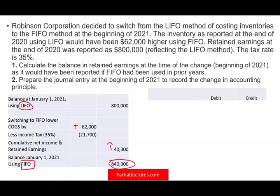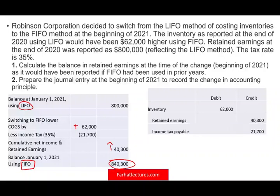We also have to prepare a journal entry. We have to increase inventory by $62,000 — that's obvious. We have to increase retained earnings by $40,300, which is the net change. And now we are responsible for paying taxes of $21,700. Therefore, the entry will balance.